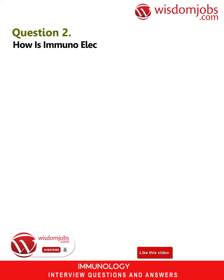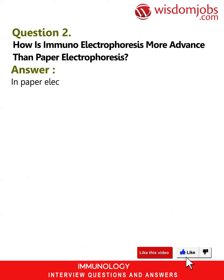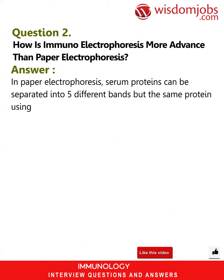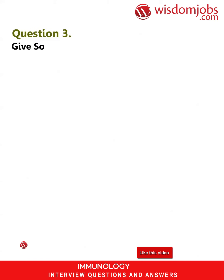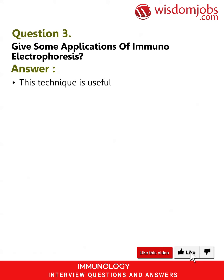Question 2: How is immunoelectrophoresis more advanced than paper electrophoresis? Answer: In paper electrophoresis, serum proteins can be separated into five different bands. But using immunoelectrophoresis, the same proteins can be separated into 30 different proteins.